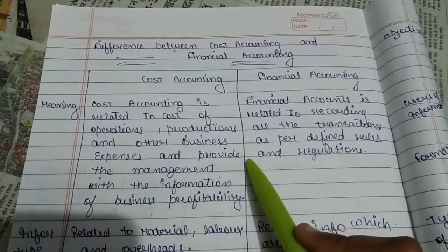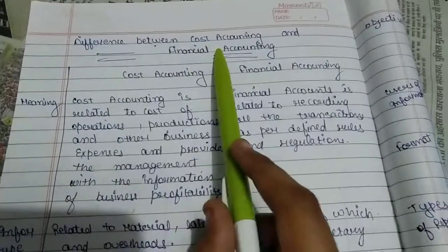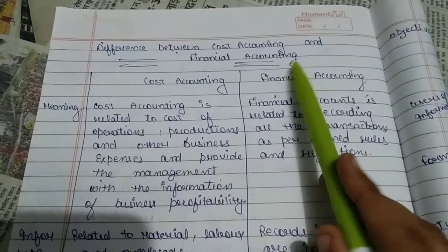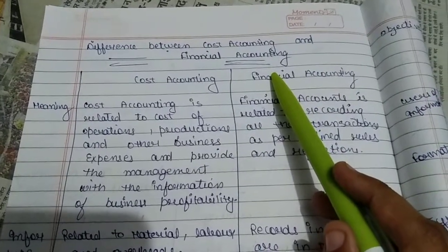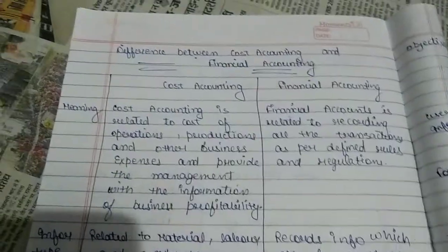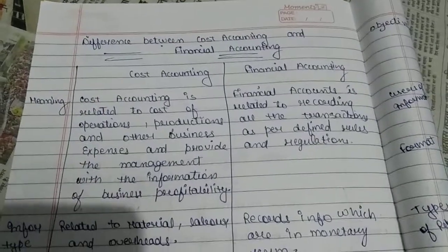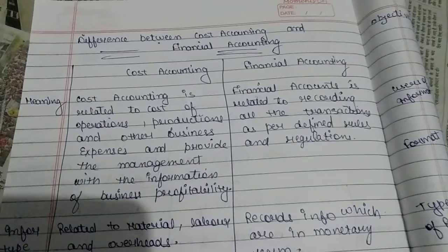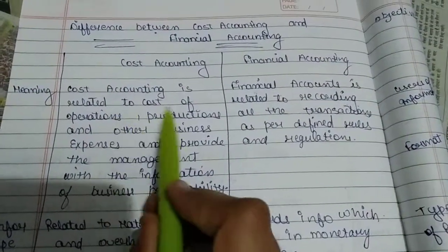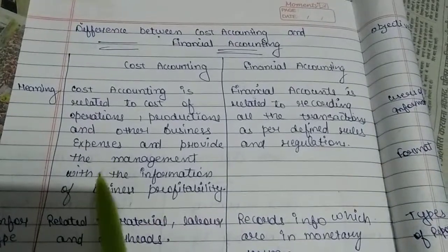Hello guys, this is our next video. In this video we are covering the topic: difference between cost accounting and financial accounting. We all know the meanings of cost accounting and financial accounting from the previous video. Now let's start the difference. First point: meaning. Cost accounting is related to cost operations, productions, and other business expenses, and provides management with information about business profitability.